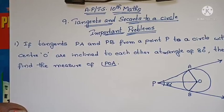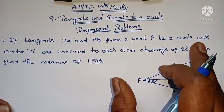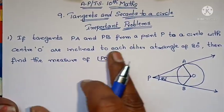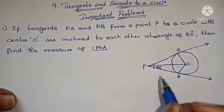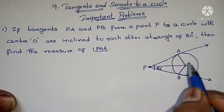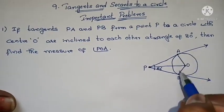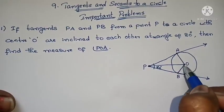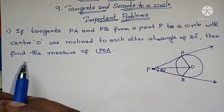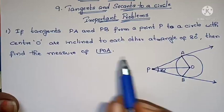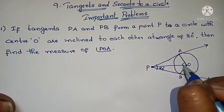The first problem: if tangents PA and PB from a point P to a circle with center O are inclined to each other at an angle of 80 degrees, find the measure of angle POA.